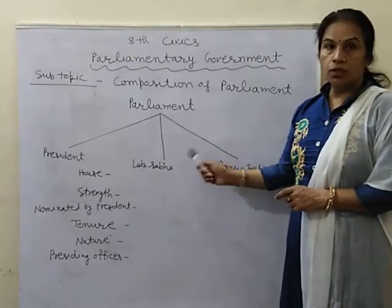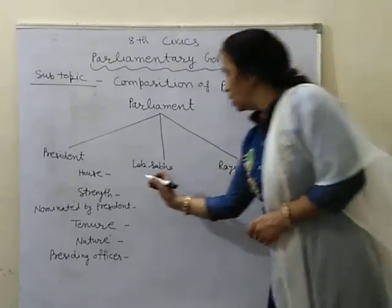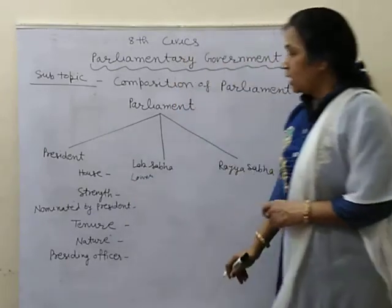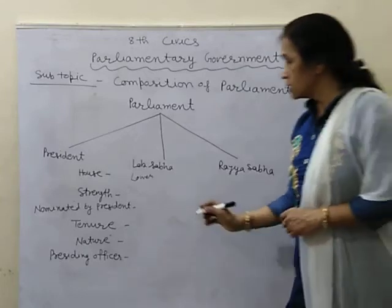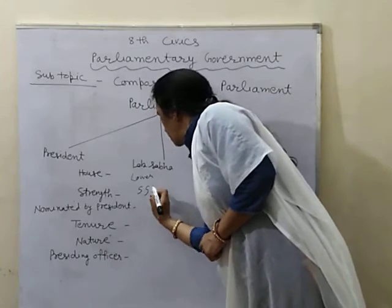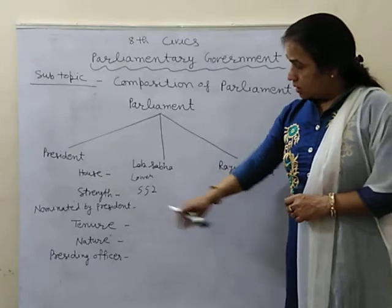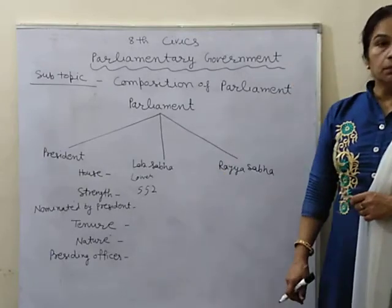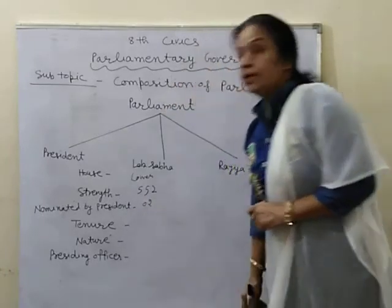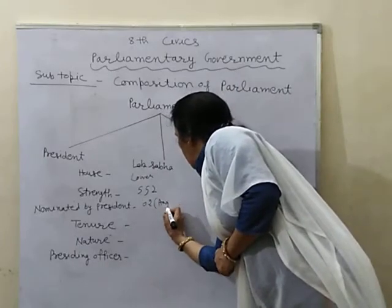First, we will take Lok Sabha. Lok Sabha is the lower house of the Parliament. Its maximum strength is 552. In this house, two members are nominated by the President. Those members are Anglo-Indian.